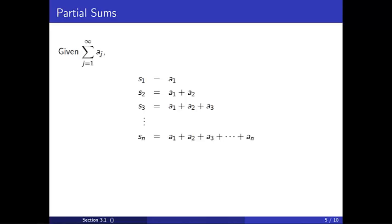so that S_n is the sum of the terms up to a_n. Each time we add one more term of the series, and then one more, and then one more. And if the sequence S_n of partial sums converges to S, then we say the infinite series a_j also converges to S.